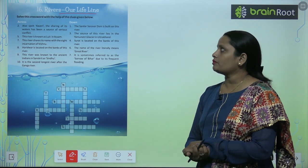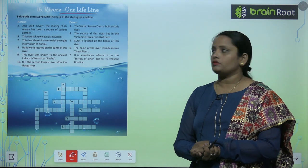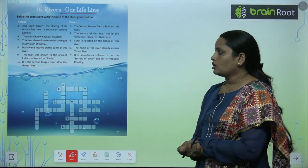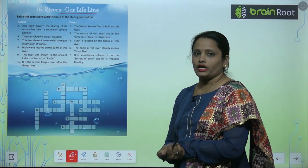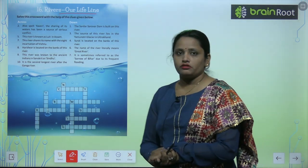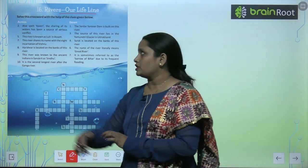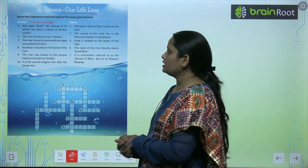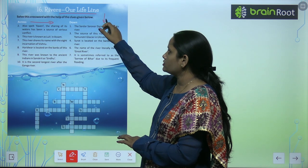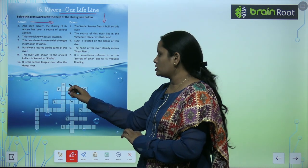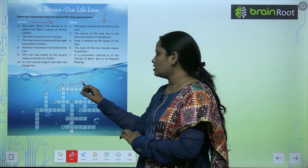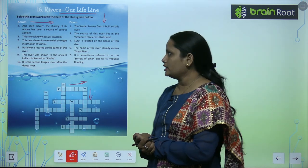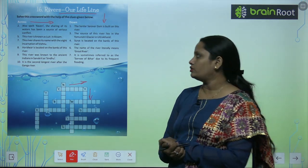Solve this crossword with the help of the clues given below. Across means you have to write in this way, and down means you have to write in this way. So this is your across and this line is your down. Clear? Like this you have to write.